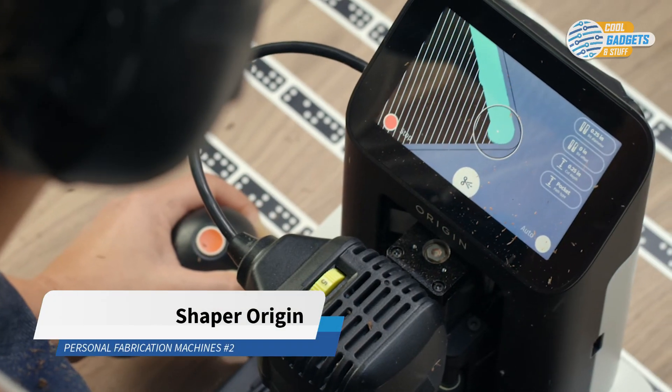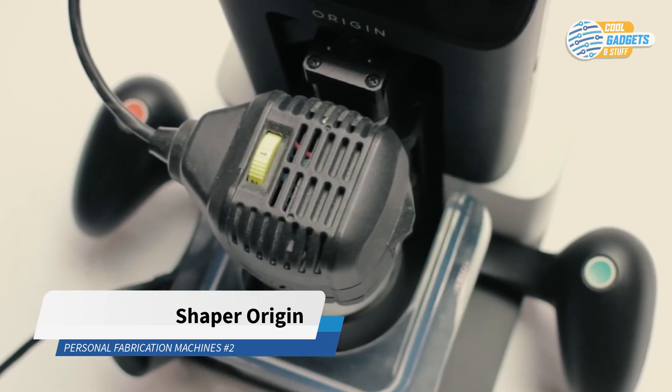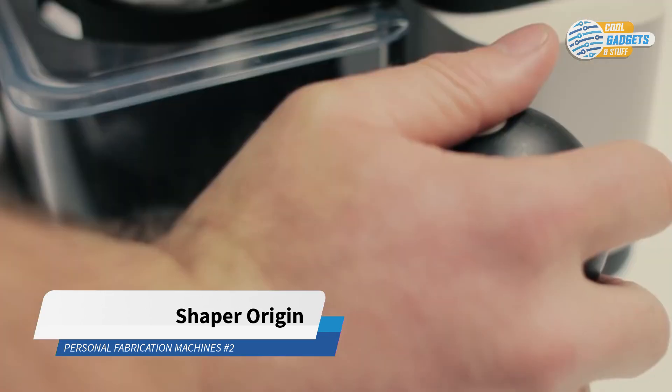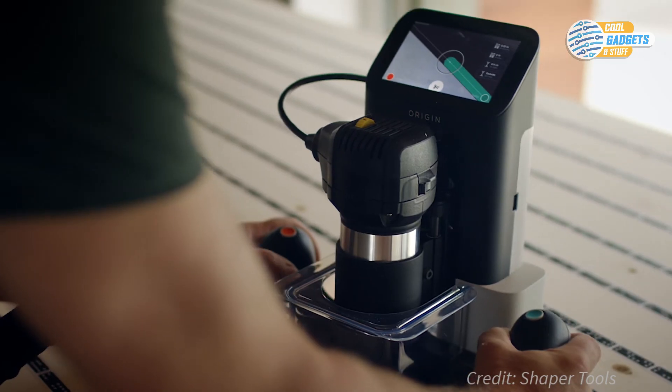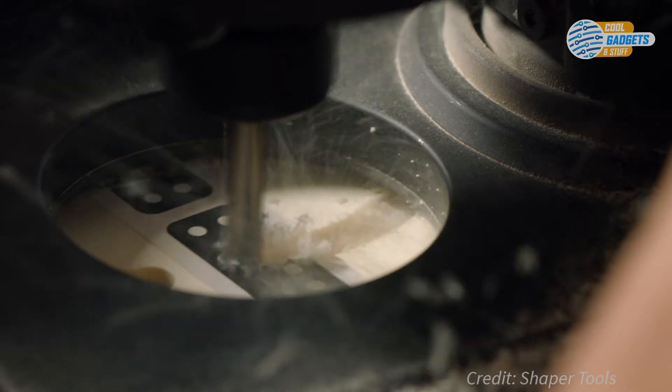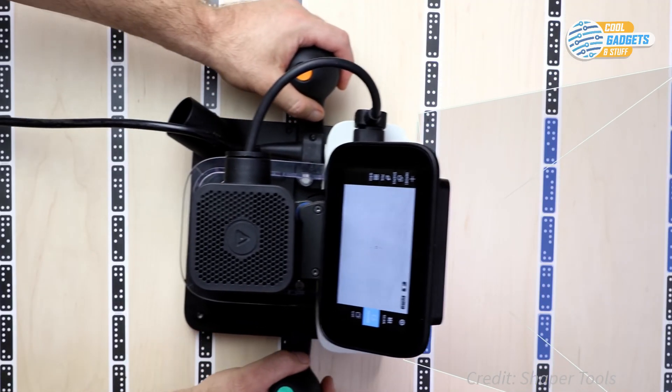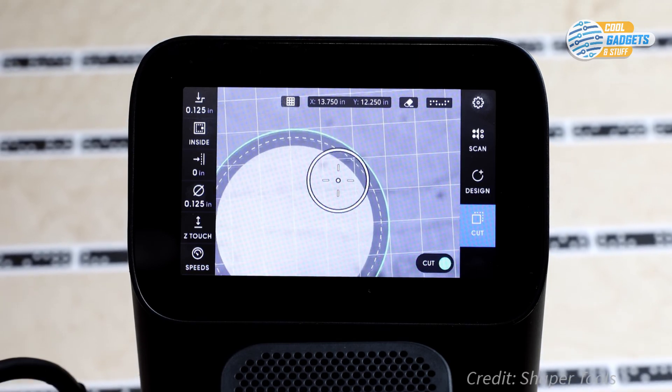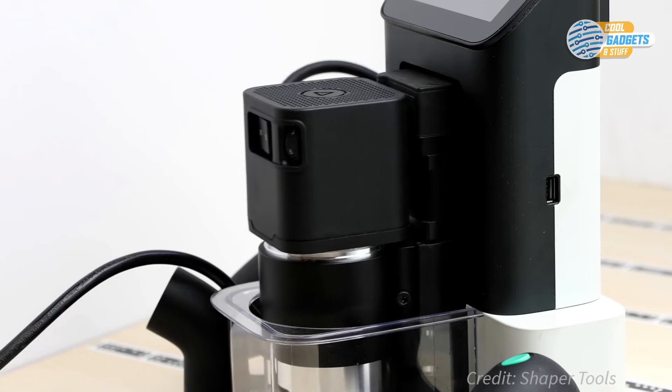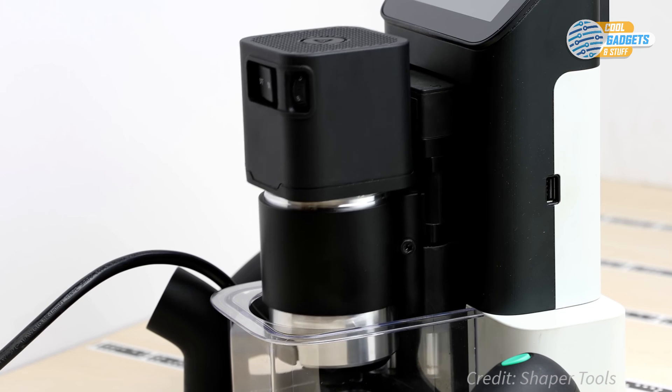The Shaper Origin is a computer-assisted handheld router machine with the precision and capability of a large bed CNC machine, but at a fraction of the size and cost. It uses computer vision and marker system to understand its position relative to the workpiece and makes continuous real-time adjustments to the spindle's position as you are making cuts.